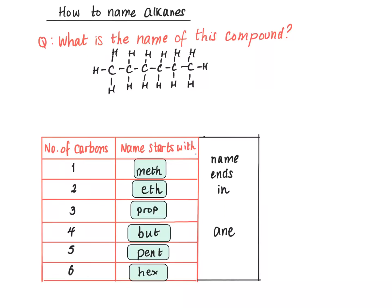So if we look at this compound it has one, two, three, four, five, six carbons. So six carbons means it begins with hex and because it's an alkane it ends in A-N-E. So the name of this compound here is hexane.